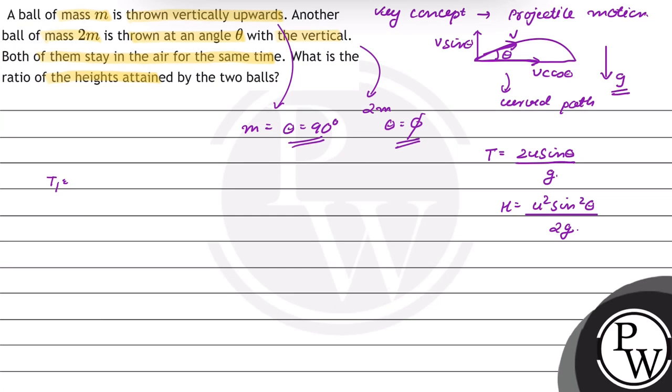T1 = 2u sin 90° / g = T2, and T2 ki value hai 2u sin θ / g. So T1 = T2, which gives 2u1 / g = 2u2 sin θ / g.